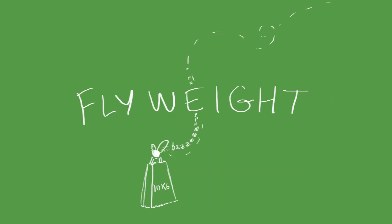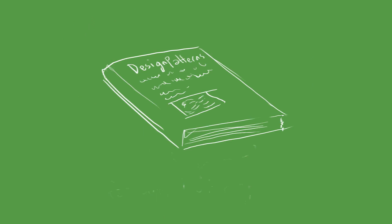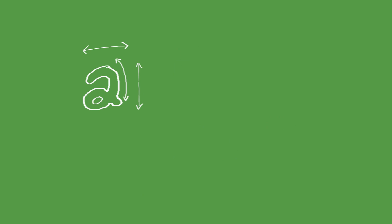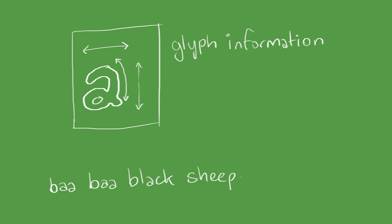The classical example of this in the Gang of Four's Design Patterns book has to do with character glyphs and word processing. Each character is an object containing a ton of data about how exactly it should be rendered. We don't need a copy of this data for each letter we have on the page. Each character can reference a shared immutable object that contains all of that data only once in memory.